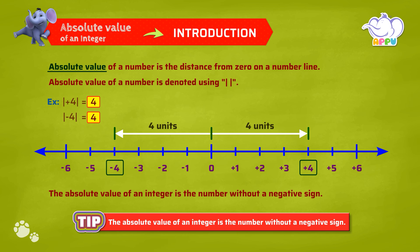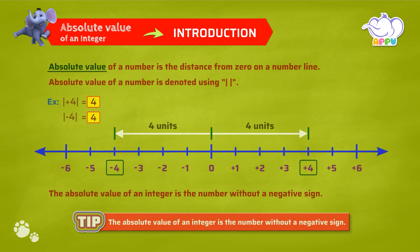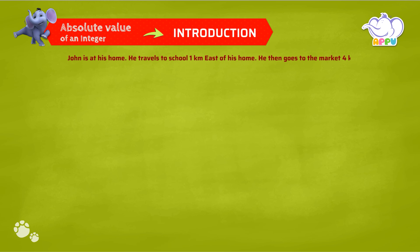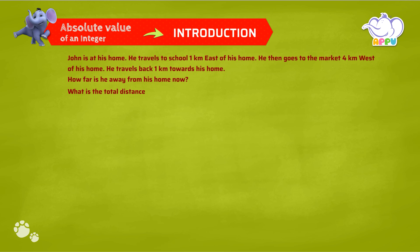Let's see where we can use absolute value. John is at his home. He travels to school 1 km east of his home. He then goes to the market 4 km west of his home. He travels back 1 km towards his home. How far is he away from his home now? What is the total distance traveled by John till now?